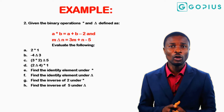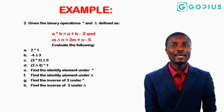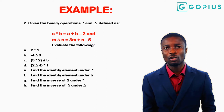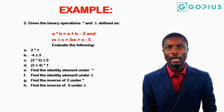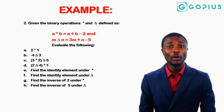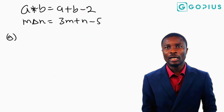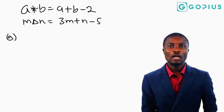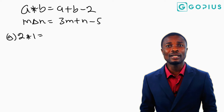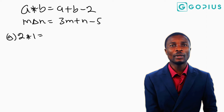We have to evaluate the following: 2 star 1, minus 4 delta 3, and the rest. So let's solve. Our a star b is given as a plus b minus 2, and m delta n is given as 3m plus n minus 5. The first question we are expected to evaluate is 2 star 1.